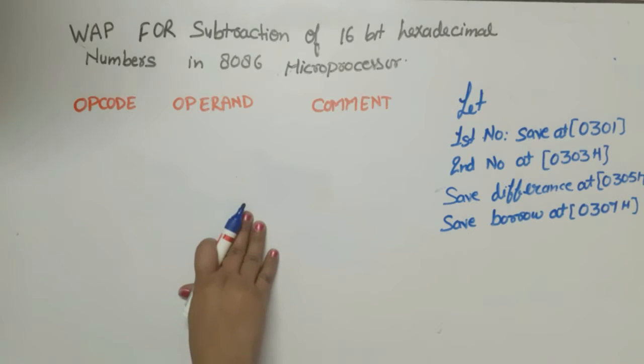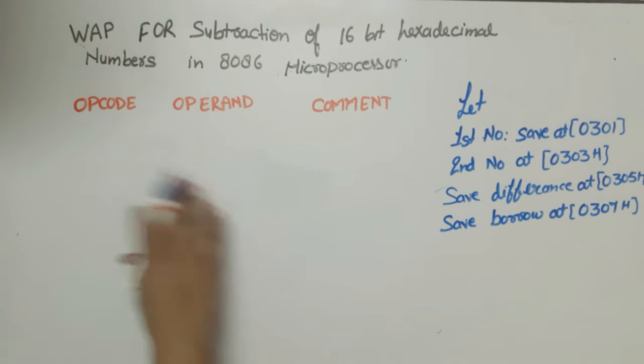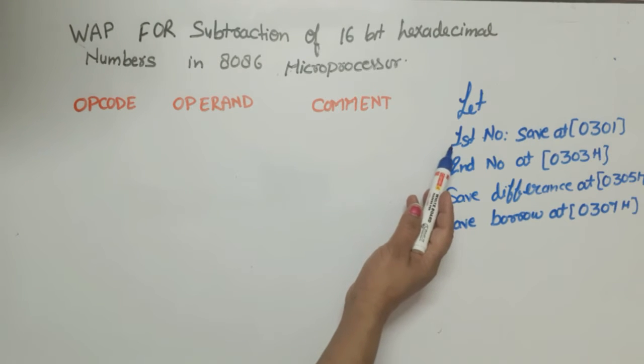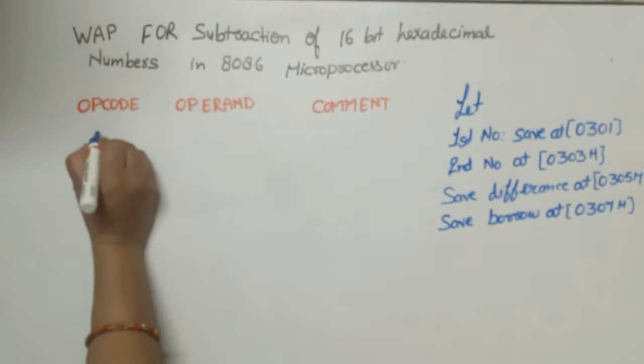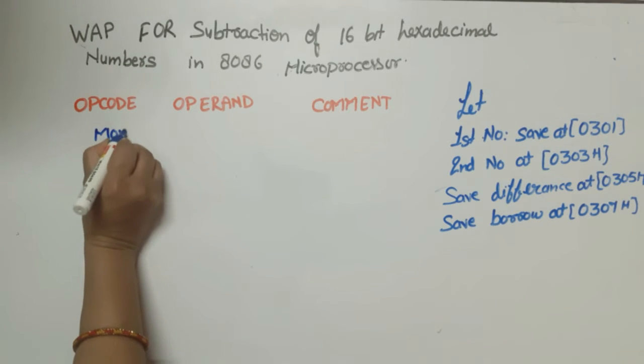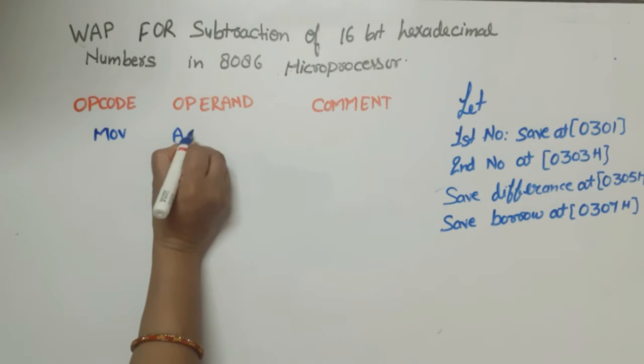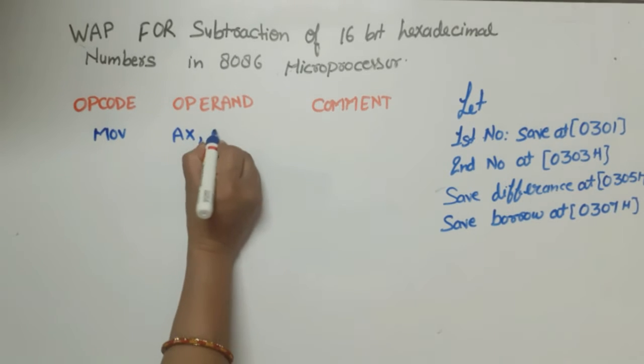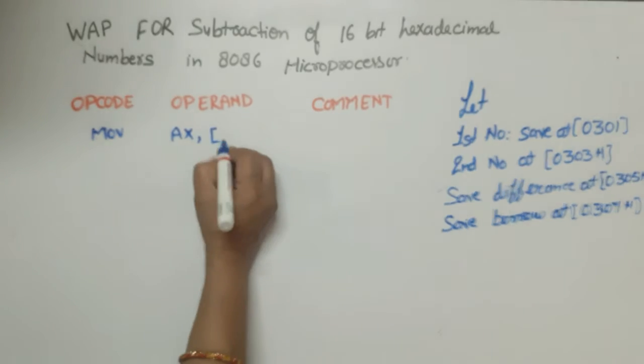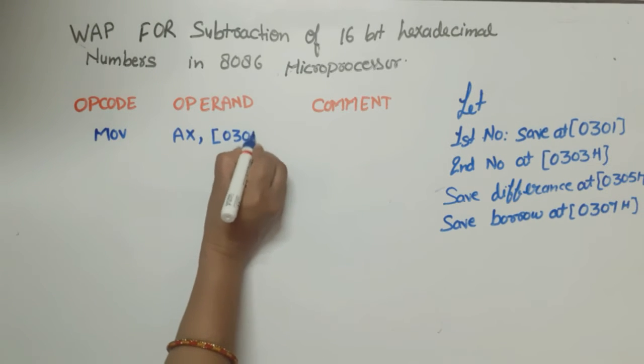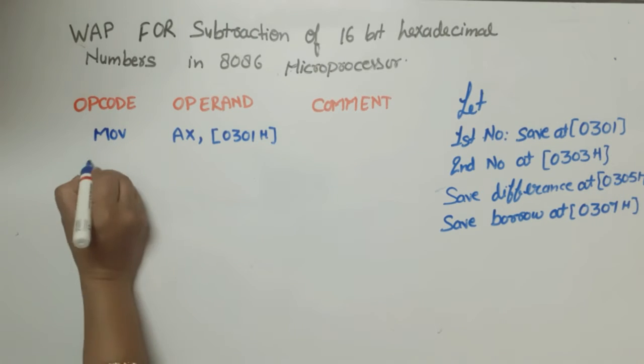So let's start the program. Now I am going to start writing the program. First we will store the first number. So for this we will move, suppose we have moved first number in AX. First number was at 0301h.